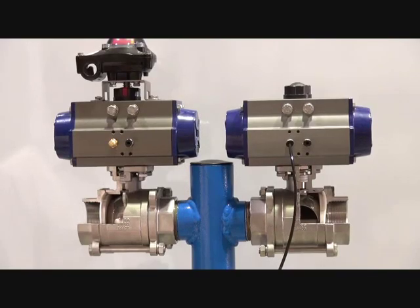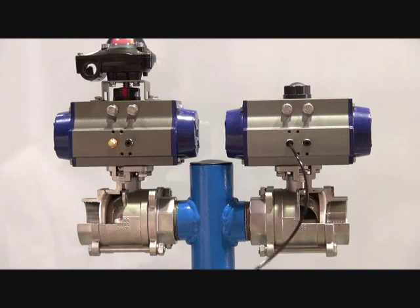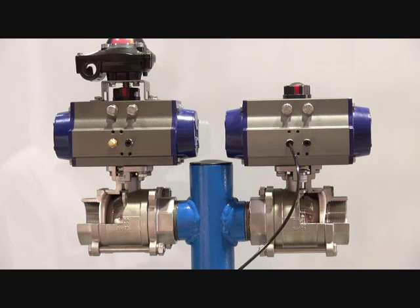With the double acting actuator, I've piped this up so we can put signal into both sides. Operate in this direction. The actuator swings around, and we remove the air supply and the actuator will stay where it is.